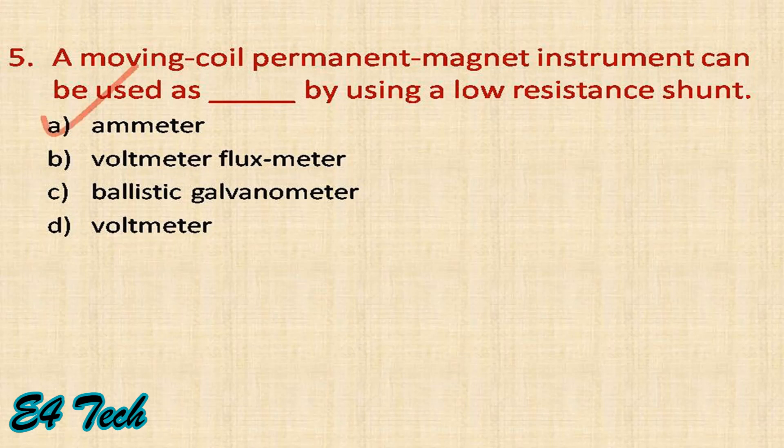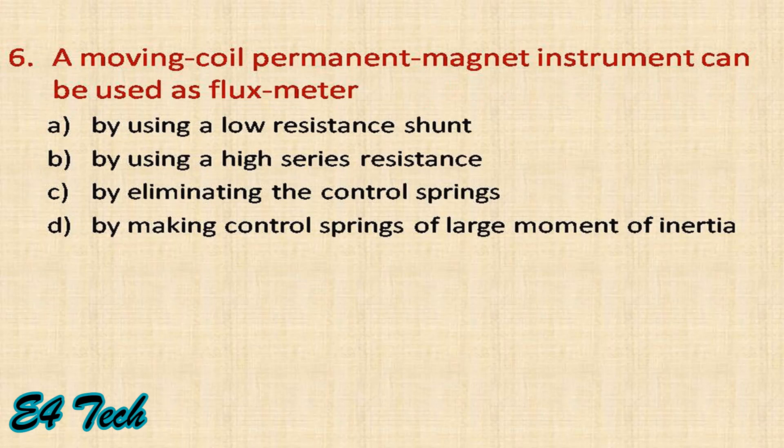A moving coil permanent magnet instrument can also be used as a flux meter. A moving coil permanent magnet system can be used as a flux meter by eliminating the control springs, not by using a low resistance shunt or high resistance.